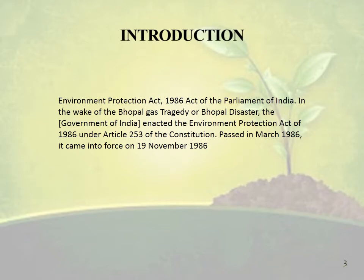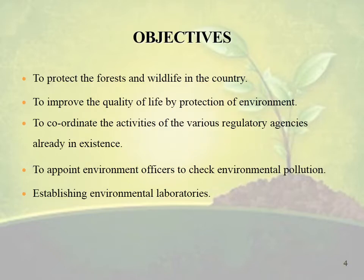First we can see the introduction of Environment Protection Act. The Environment Protection Act was introduced in the year 1986 by the Parliament of India. In the wake of the Bhopal Gas Tragedy or Bhopal Disaster, the Government of India enacted the Environment Protection Act of 1986 under Article 253 of the Constitution. This act was passed in March 1986 and came into force on 19th November 1986.